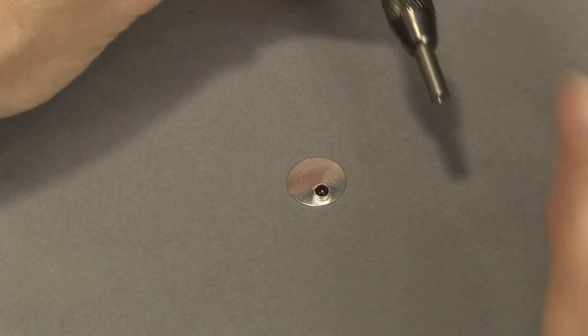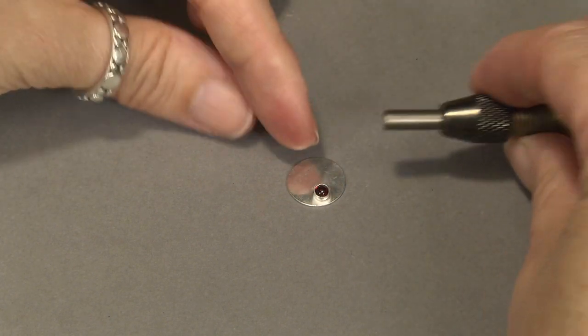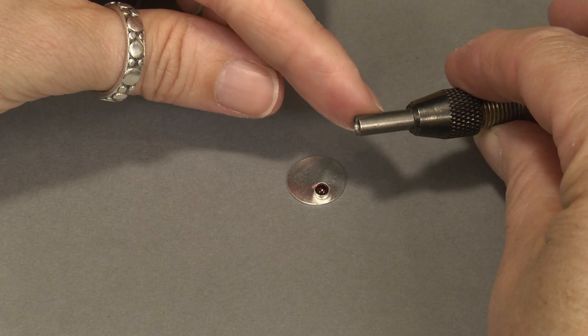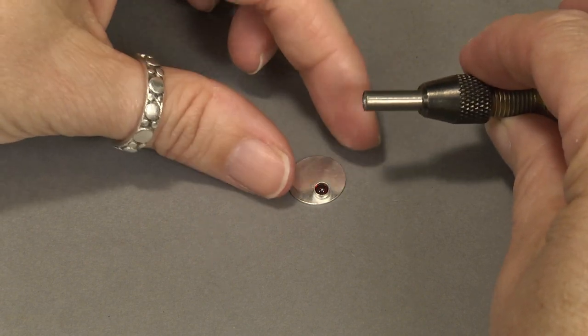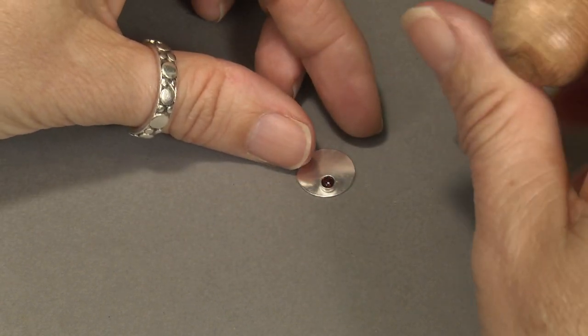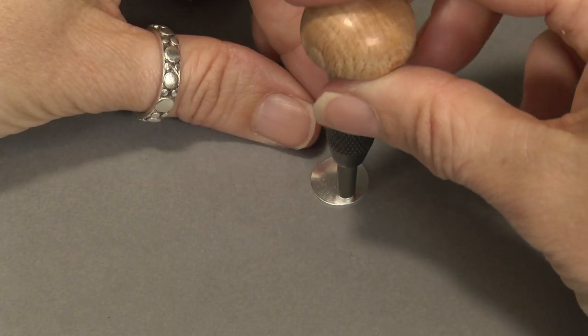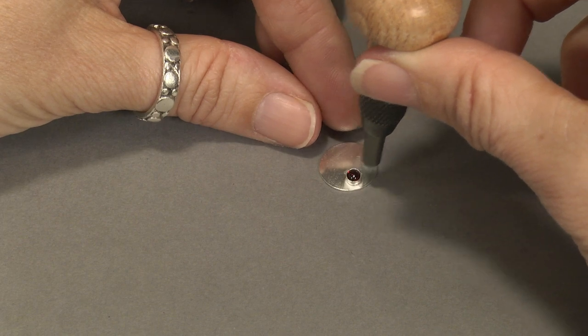Alright, so that guy is set right in there perfectly. Now, this is a three millimeter bezel cup, like I said. I chose the four millimeter setting bit here because the three mil is exactly three mil and I want to be a little bit larger so that when I come on top of it, it will bring it down rather than just sit on the very top.